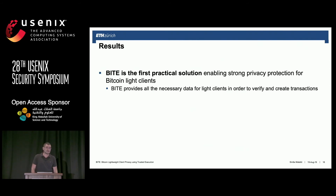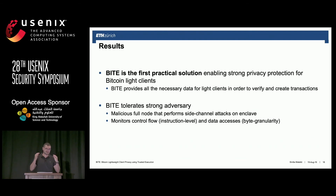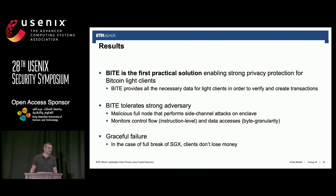To finalize: BITE is the first practical solution that enables strong privacy protection for Bitcoin lightweight clients. It provides all the necessary data for light clients to confirm their transactions and create new outputs from their wallets. We designed the system to tolerate a strong adversary — including a malicious full node that performs side-channel attacks on the enclave. For the oblivious database, the adversary can only observe external leakage; for the scanning window, the adversary can also monitor control flow at instruction level. We provide what we call graceful failure: even if you completely break down the enclave, what you lose is only the privacy you didn't really have in the first place.